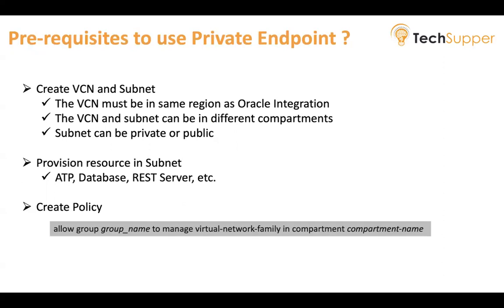You also have to create a policy so that Oracle Integration can access the VCN. The policy syntax is: allow group [group name] to manage virtual-network-family in compartment [compartment name], where the compartment name must be the same as your Oracle Integration instance compartment. This is a one-time task that your administrator can create on your behalf.